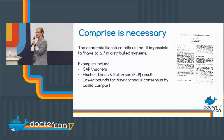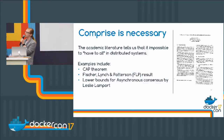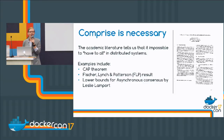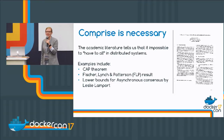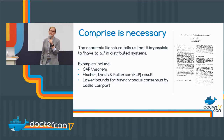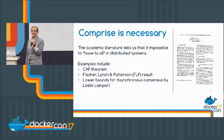In fact, there are so many things we can't do that Nancy Lynch wrote a paper: 'A Hundred Impossibility Results in Distributed Computing.' A hundred — that's a lot of things that we can provably not do.